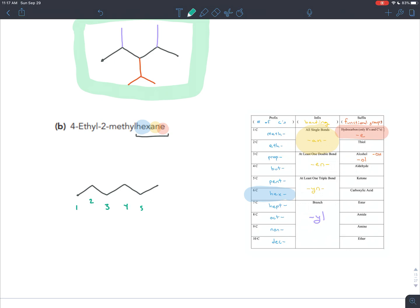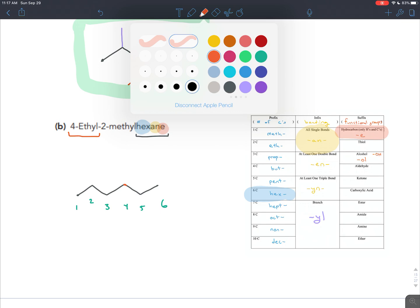Now I get to number this however I want because I'm drawing a molecule. So you could number it however you want. I'm going to number it left to right, three, four, five, six. So those are my carbons. My first branch is coming off of carbon four. So that's going to be this one.